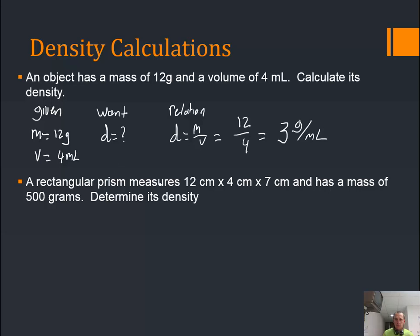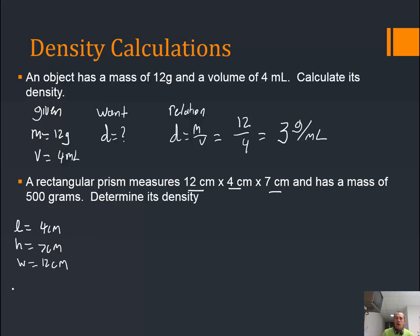Let's look at one more example. A rectangular prism measures 12 centimeters by 4 centimeters by 7 centimeters and has a mass of 500 grams — determine its density. This one is a little more complicated. Your given information includes three lengths: length, width, and height. So length equals 4 centimeters, height equals 7 centimeters, width equals 12 centimeters — it doesn't really matter which you label what. And mass equals 500 grams.